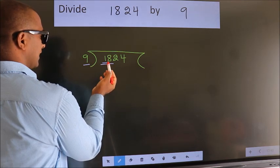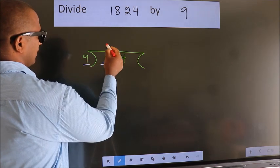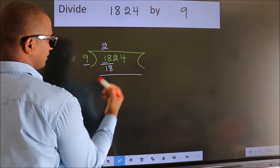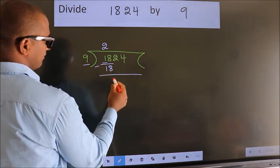When do we get 18? In the 9 table. 9 twos are 18. Now we should subtract. We get 0.